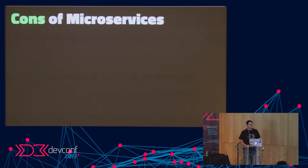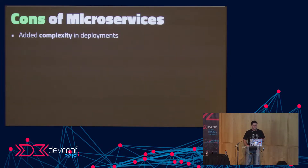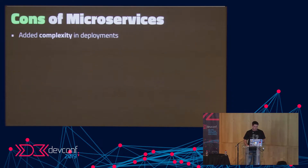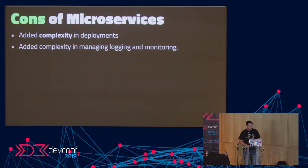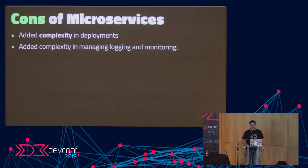Let's look at the cons of microservices. They add complexity, particularly to your deployments. With a monolith you might deploy a single application to multiple servers — it's straightforward. With microservices, instead of deploying one application, you have to deploy multiple applications at the same time. Another complexity is managing logging and monitoring. With a monolith, you log in one place and it's obvious what happened — a function failed, you can see it in the logs.